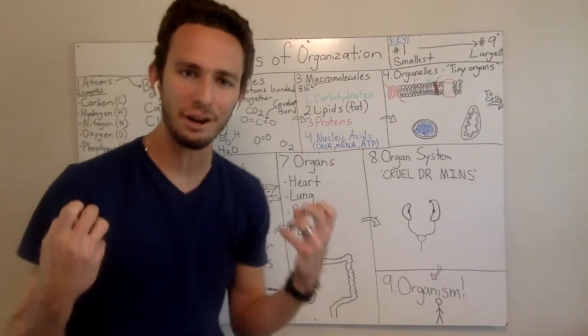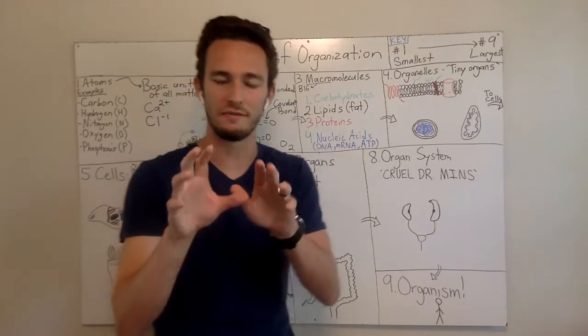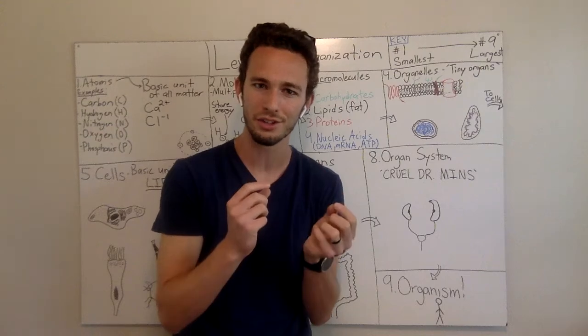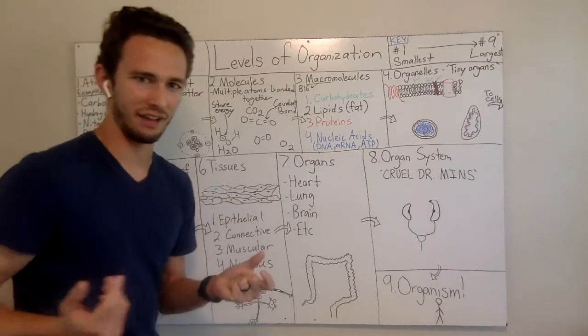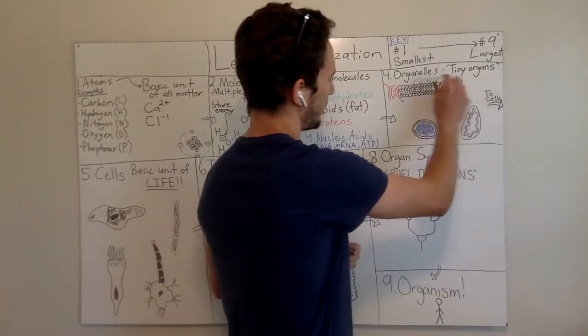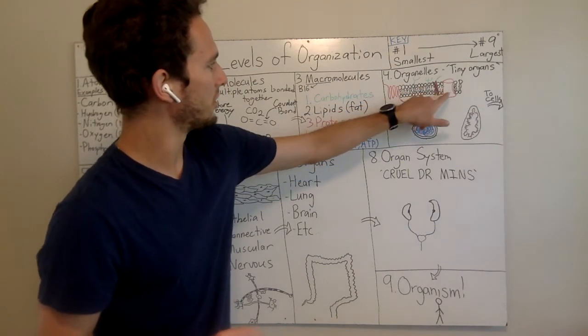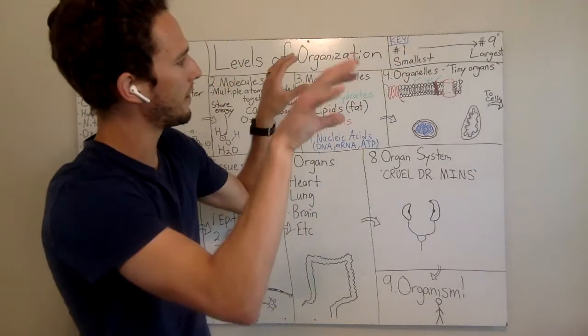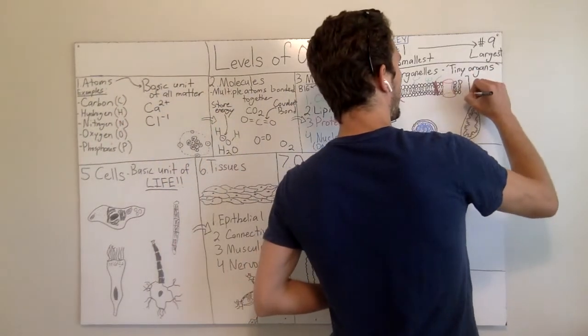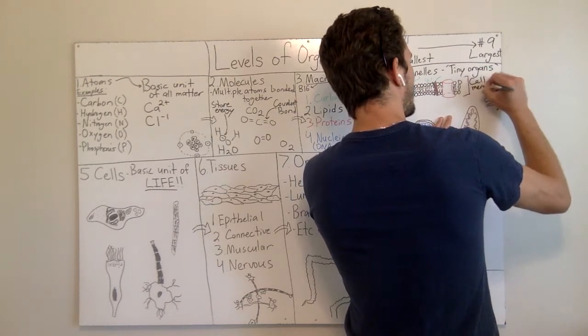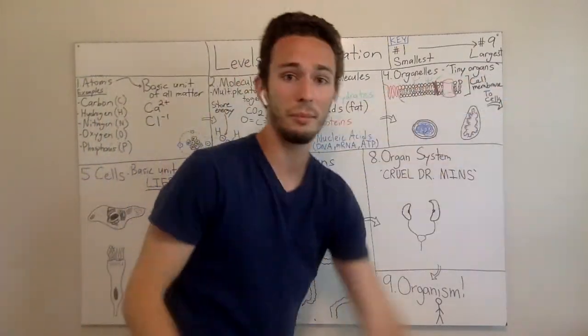Now we're going to leap forward. If we put macromolecules together, so these four basic ones, we can form organelles. This is very specific to living things because we're going to talk about cells here in a second. Organelles are literally miniature organs within a cell. I have three of them on here, and I want you to see the way I colored them.